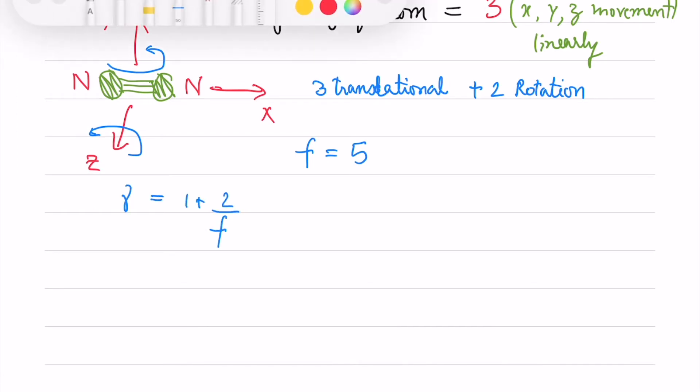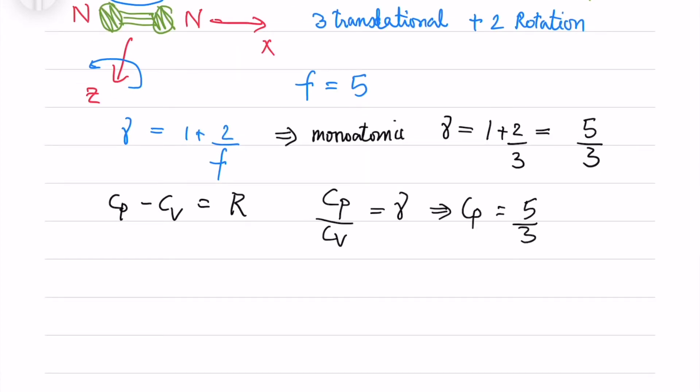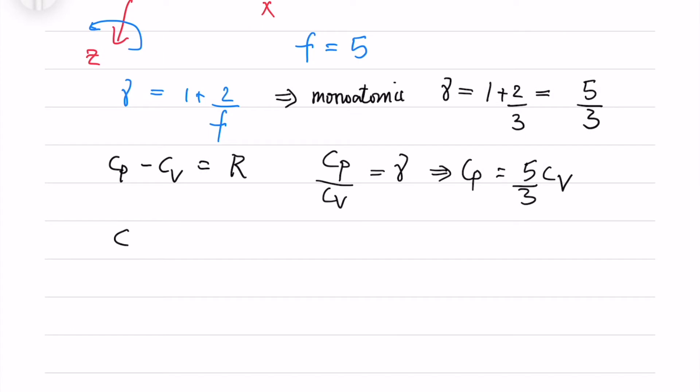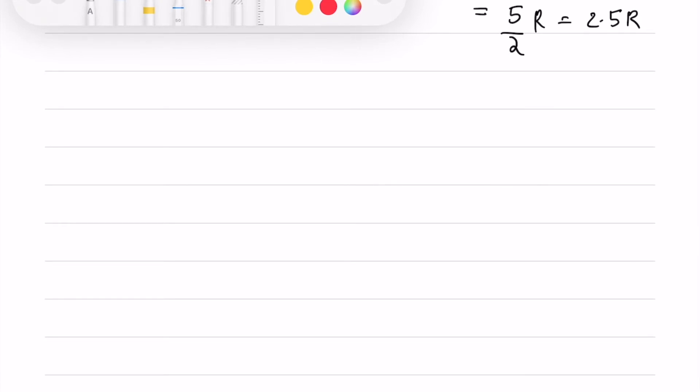So the gamma is defined as 1 plus 2 by degree of freedom. For monoatomic ideal gas gamma is nothing but 1 plus 2 by F that is 5 by 3. Also we know Cp minus Cv equals to R and Cp by Cv is gamma. So we have Cp is 5 by 3 times Cv for monoatomic gas and Cv equals to 3 by 2 times R. Now Cp is nothing but Cv plus R which is 2.5 R. So we will go ahead with this information.